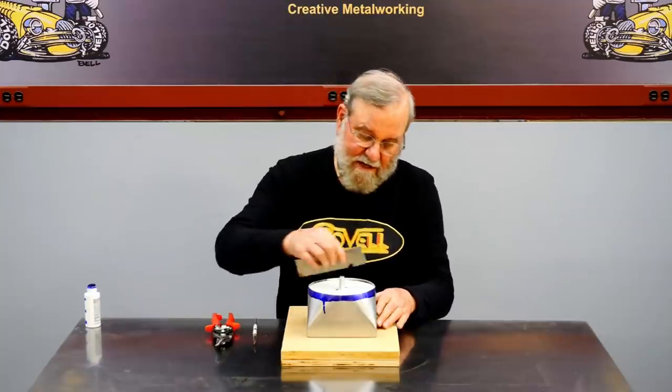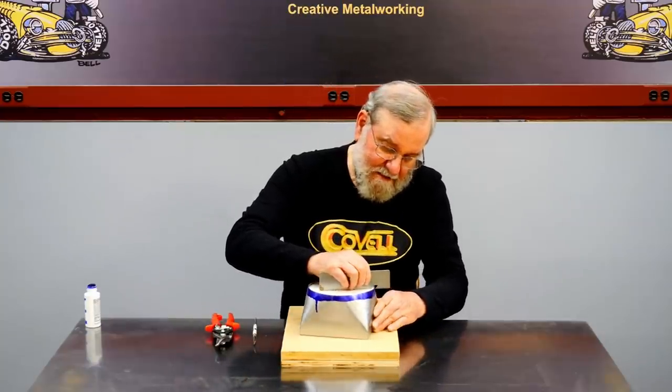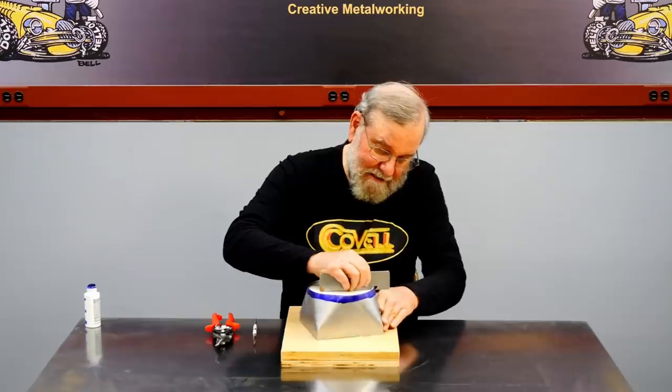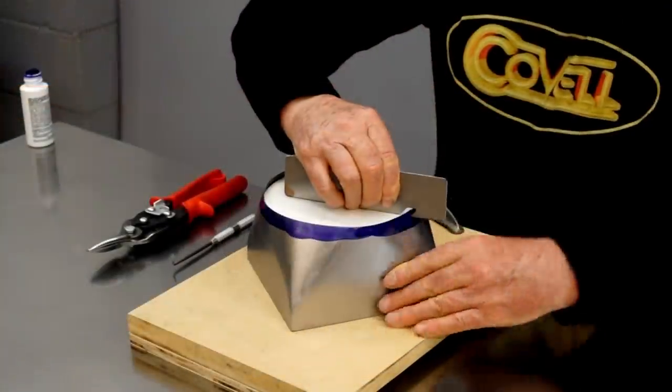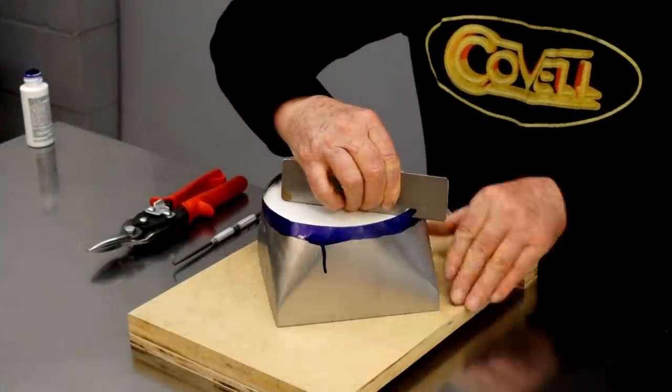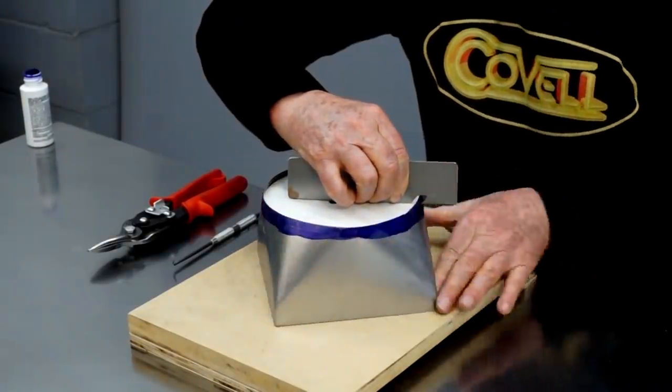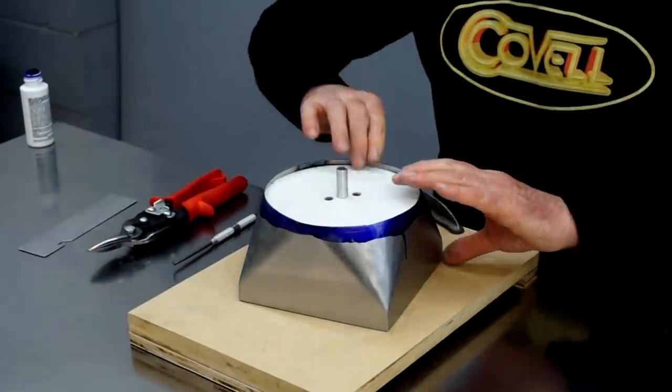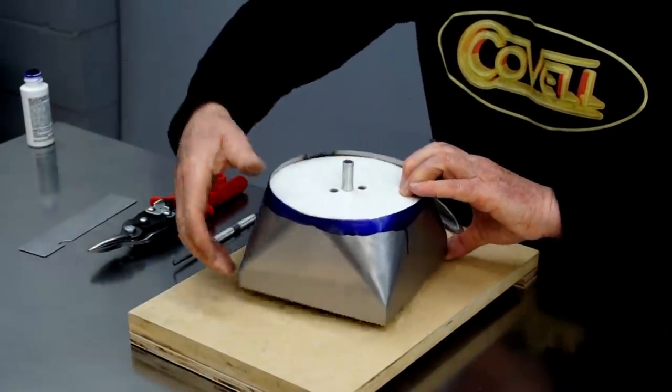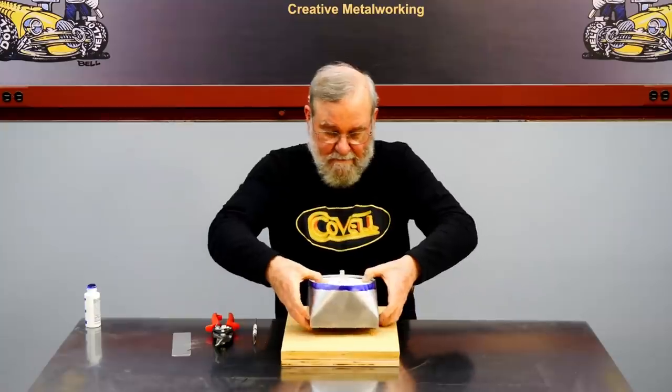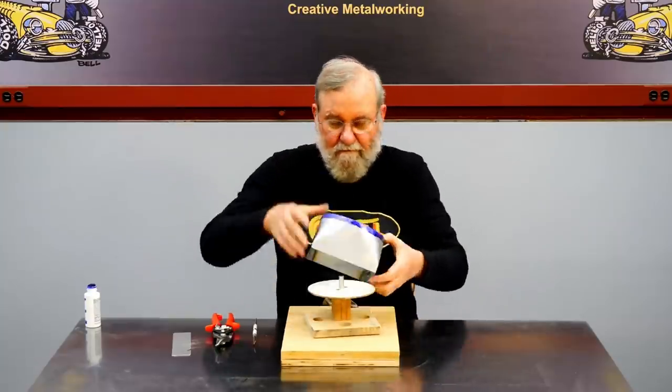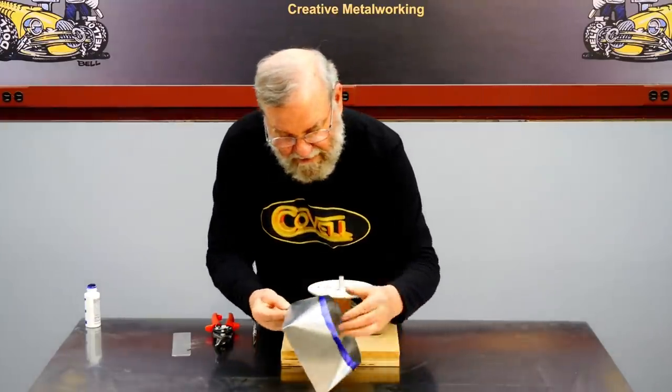Okay, and now I can scribe around the outside edge of this. I'll just rotate the part. I think that'll be easier than trying to move the tool. So there's our scribed line. Let's pull this off the form. And I'll trim right on that line.